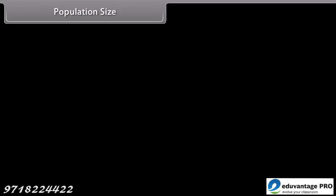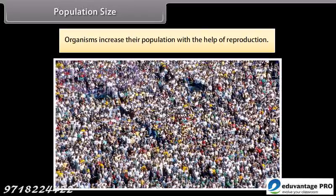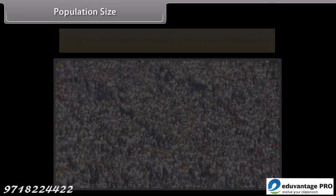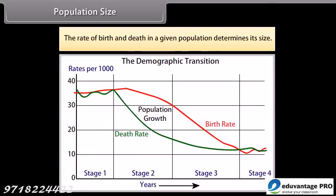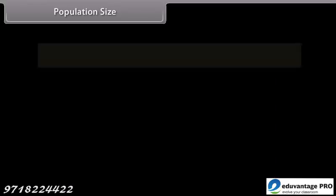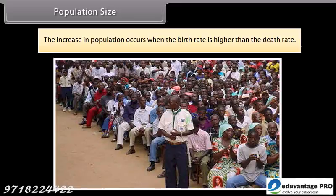Organisms increase their population with the help of reproduction. The rate of birth and death in a given population determines its size. The increase in population occurs when the birth rate is higher than the death rate.